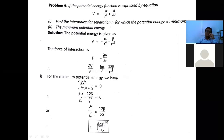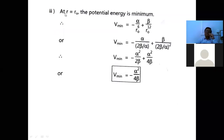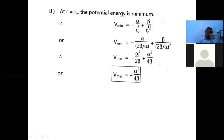For minimum potential energy at r = r0, setting dV/dr = 0 gives r0 = (2β/α)^(1/6). At r = r0, the minimum potential energy is V_min = α − α/r0⁶ + β/r0¹². Substituting the value of r0, we get V_min = −α²/(4β).